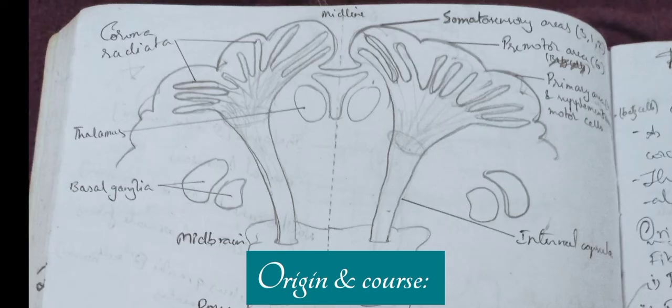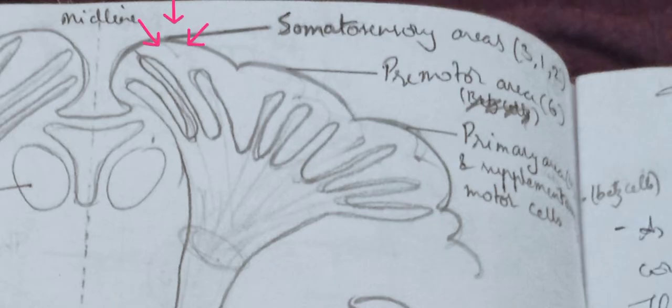Origin and course: Somatosensory area contributes 40% of fibers, premotor area 30% of fibers, and primary and supplementary motor areas 30% of fibers.